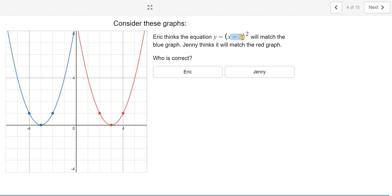And the answer is, horizontally is the opposite direction than you think. So it would be the red graph. It wouldn't go to negative 3. It would go to positive 3. So Jenny would be right.